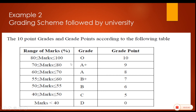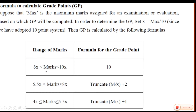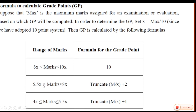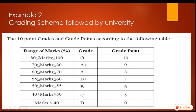Let us assume the student scored 90 marks — that falls in the 80 to 100 range, so he gets 10 grade points straight away, and the associated grade is O. Let us assume the student scored 70 marks. 70 falls in the second category from 55 to 80. Marks is 70, so we put m as 70: 70 divided by 10 is 7, plus 2 is 9. So 70 marks gives us a grade point of 9, and the associated grade is A plus.